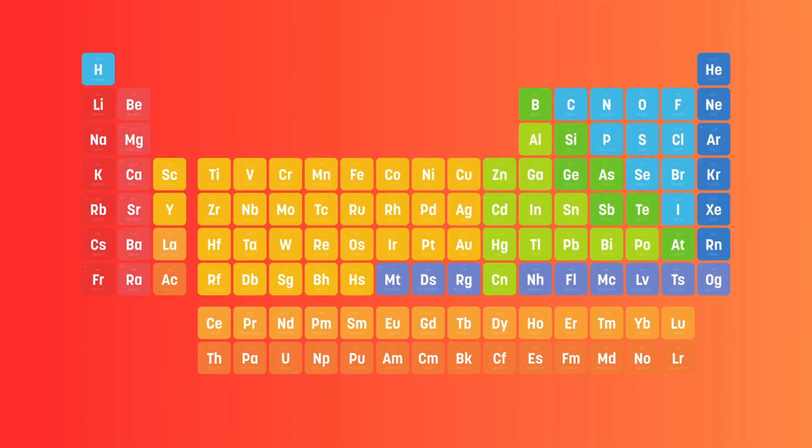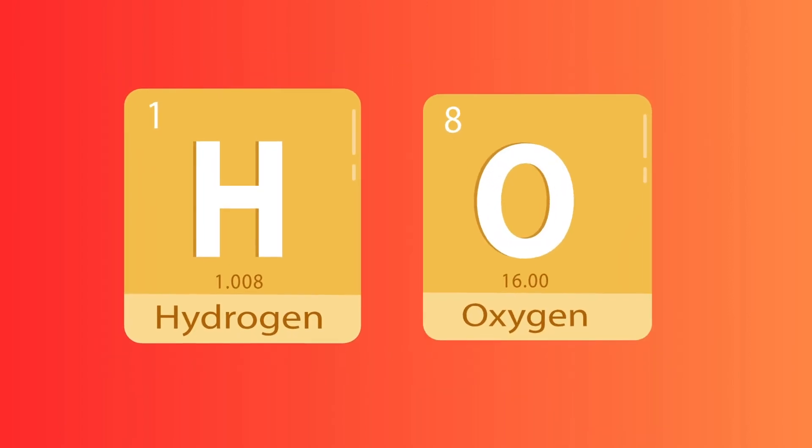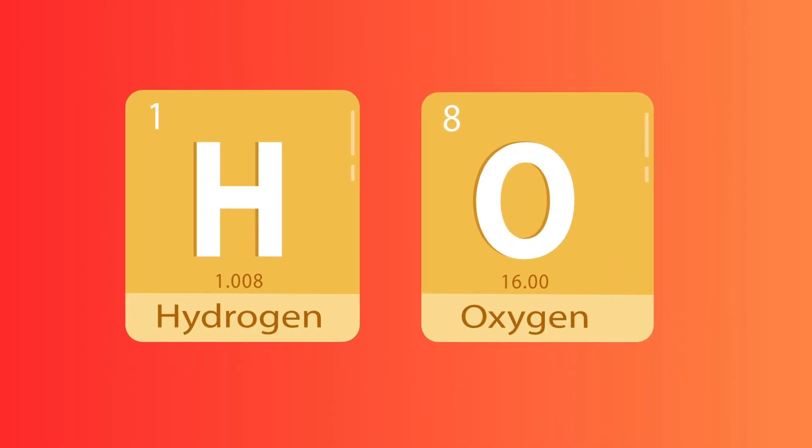On the periodic table, we see each element has a number in the top left corner. This shows us how many protons are in that element. Each element also has a symbol to shorten the name, like H for hydrogen and O for oxygen.